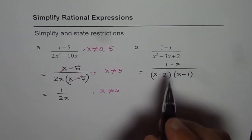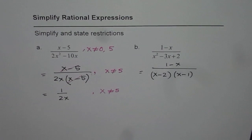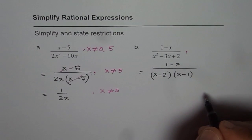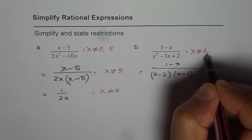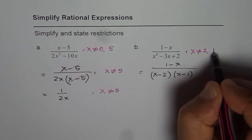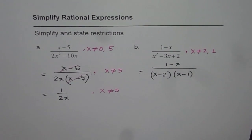Now, from here we can write down the restrictions. So, before you cancel, write restrictions. That is what I will suggest. The restriction says that x is not equal to 2 and it is also not equal to plus 1. Both the restrictions.